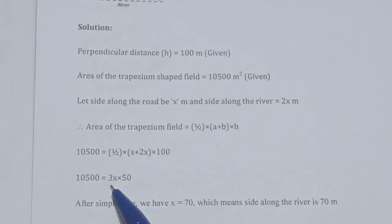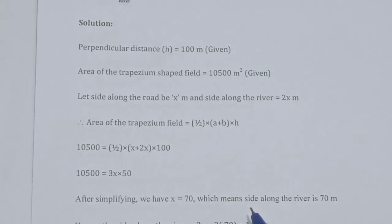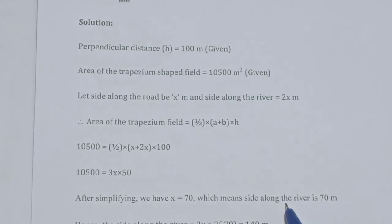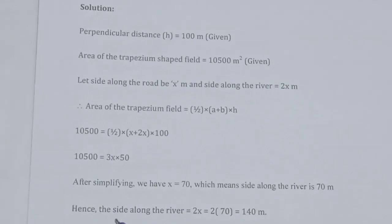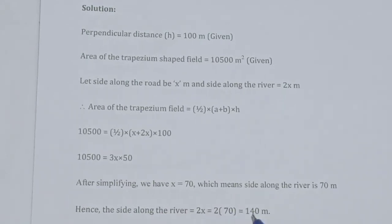Solving: 10,500 = 3x × 50, so 3x = 210, which gives x = 70 meters. The side along the road is 70 m. The side along the river is 2x = 2 × 70 = 140 meters.